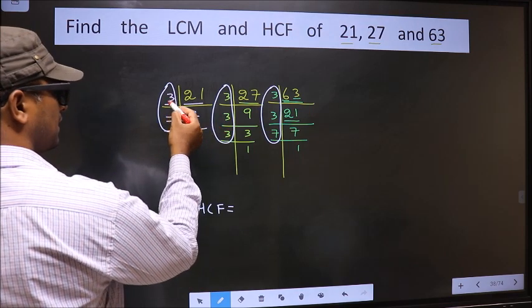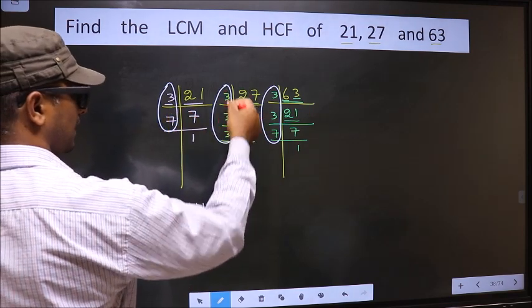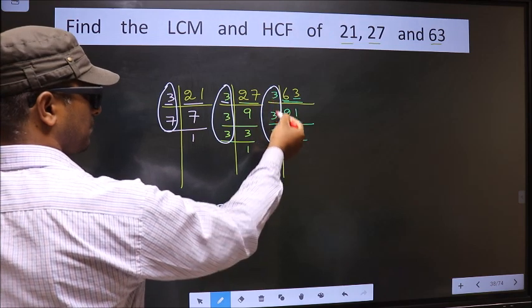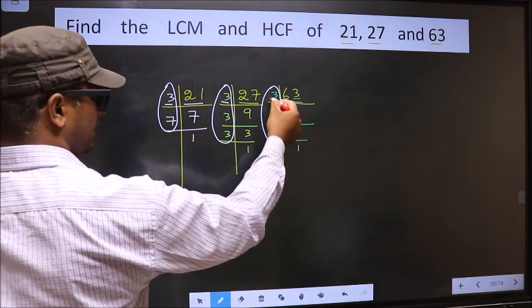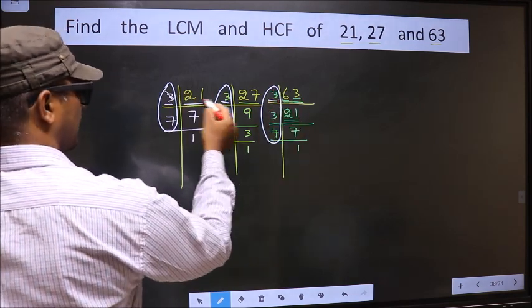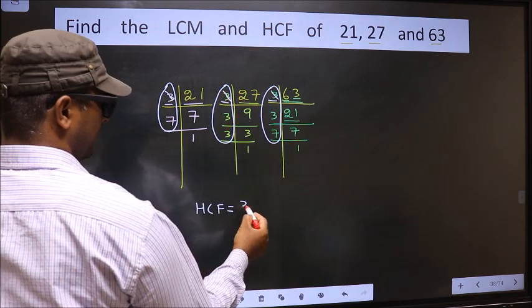Starting with the number 3. Do we have 3 here? Yes. So go to the other place. Do we have 3 here? Yes. So you cut 3 and write here.